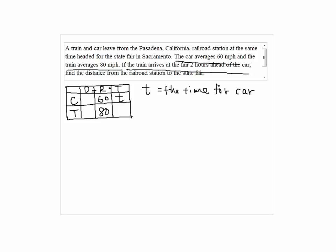When you read the sentence that the train arrives at the fair two hours ahead of the car, that means the train took two hours less than the car took, so train took T minus two hours.